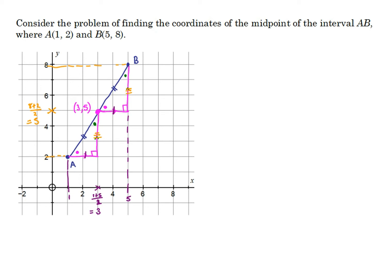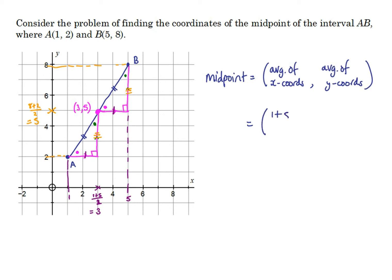So really, the midpoint is going to be the average of the x-coordinates and the average of the y-coordinates. In this case, that is (1 + 5) / 2 and (2 + 8) / 2, giving us the point (3, 5).